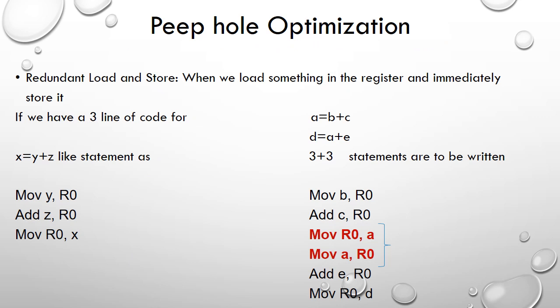The first method is eliminating redundant load and store operations. For example, if there is some data item in memory and we bring it to a register, and then in the very next statement we transfer it back to memory, this has no meaning. We can eliminate those two statements.